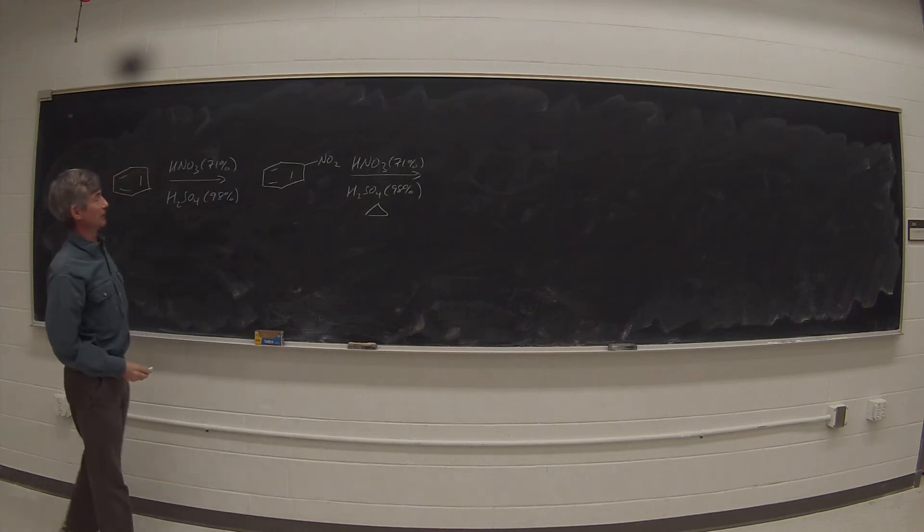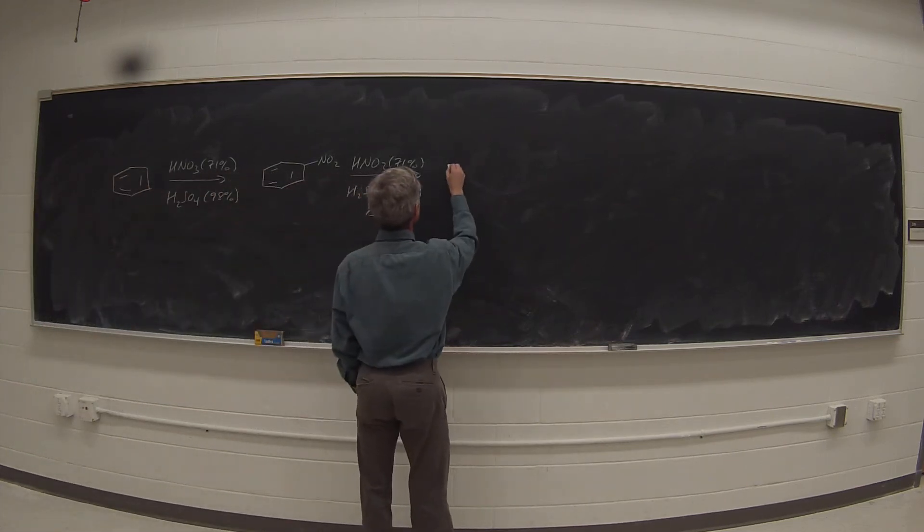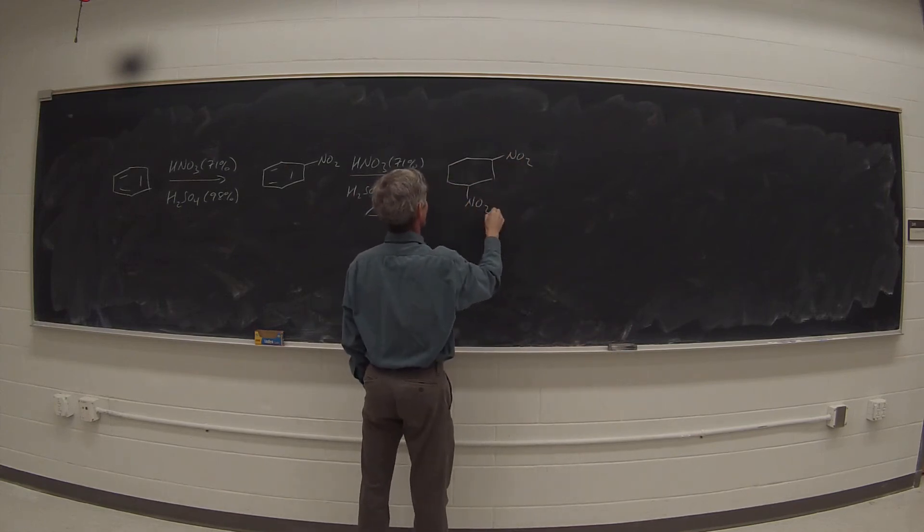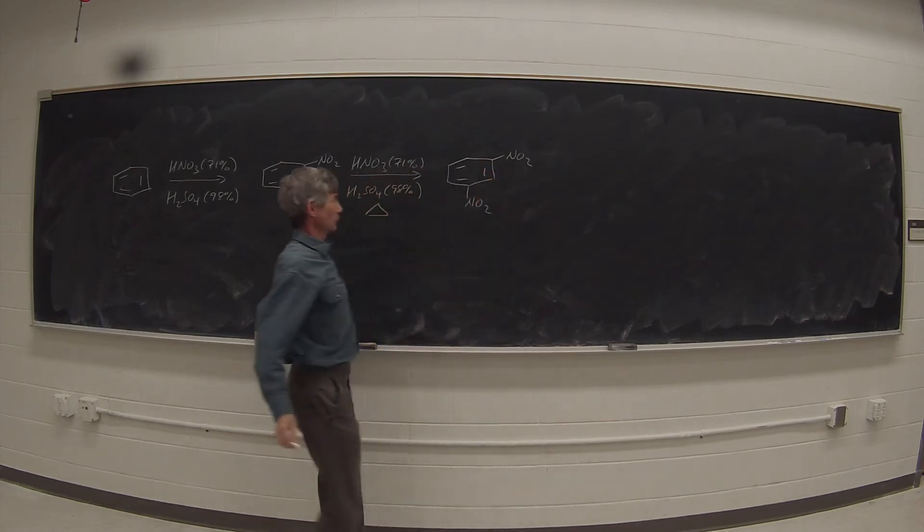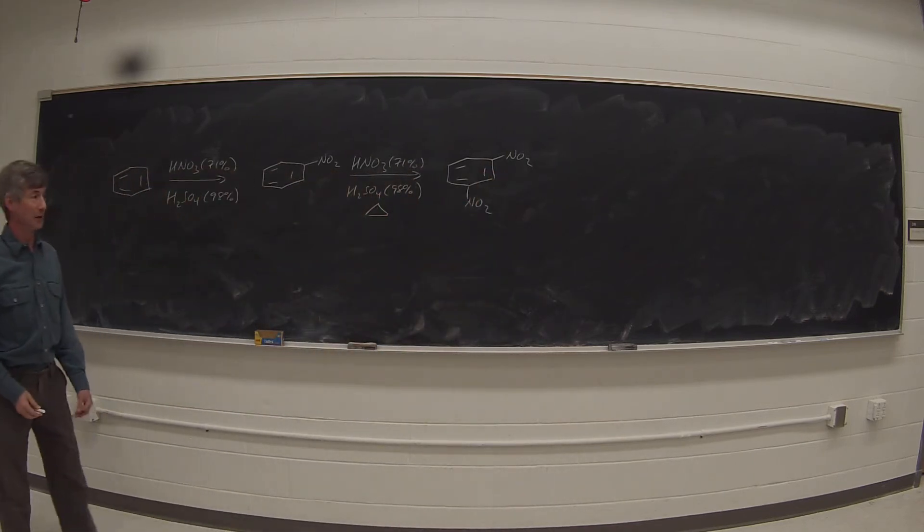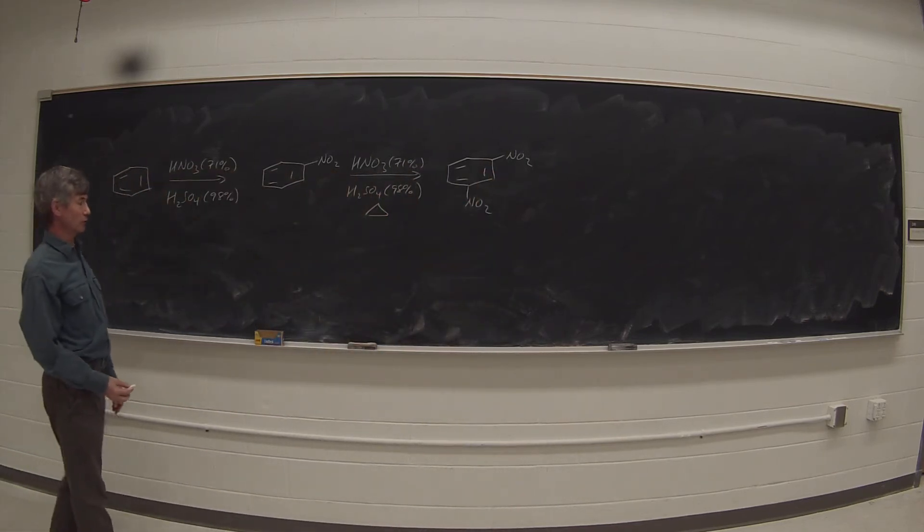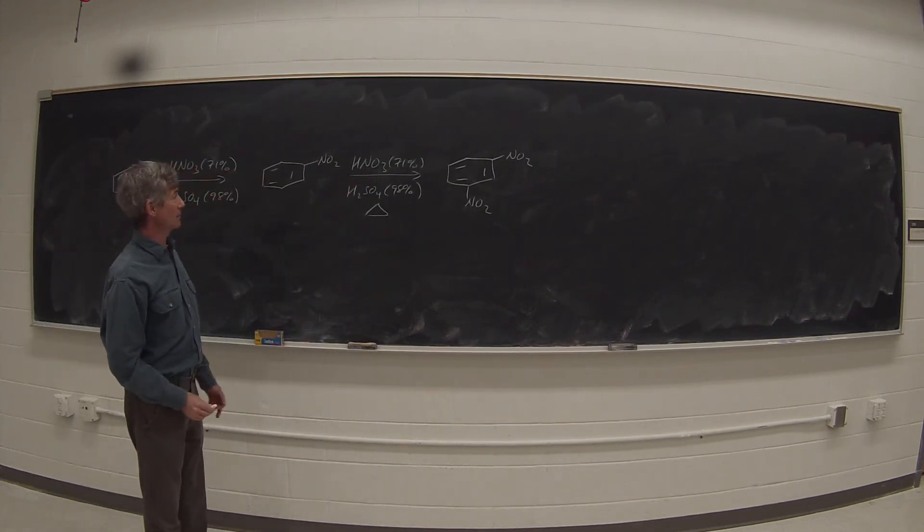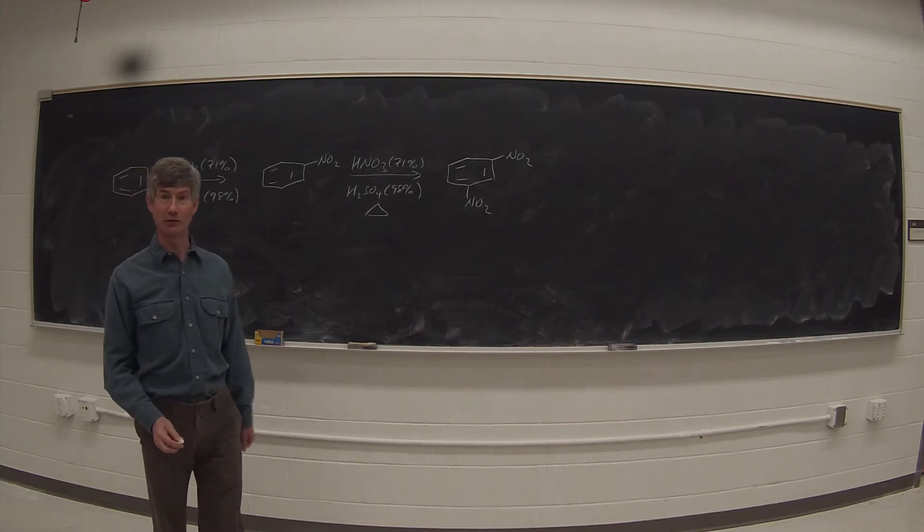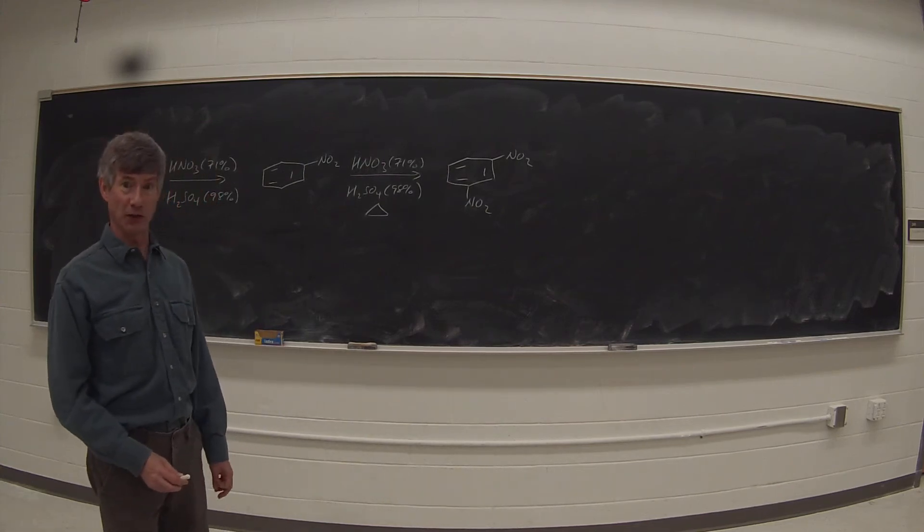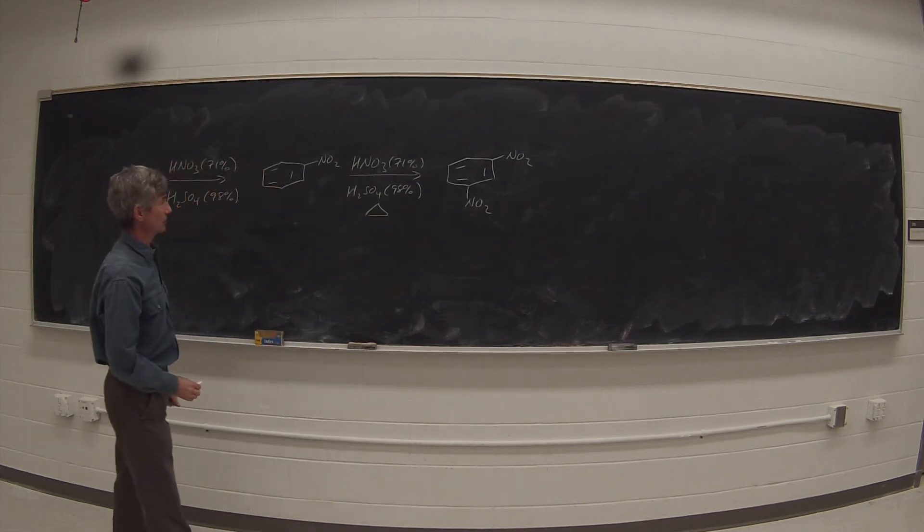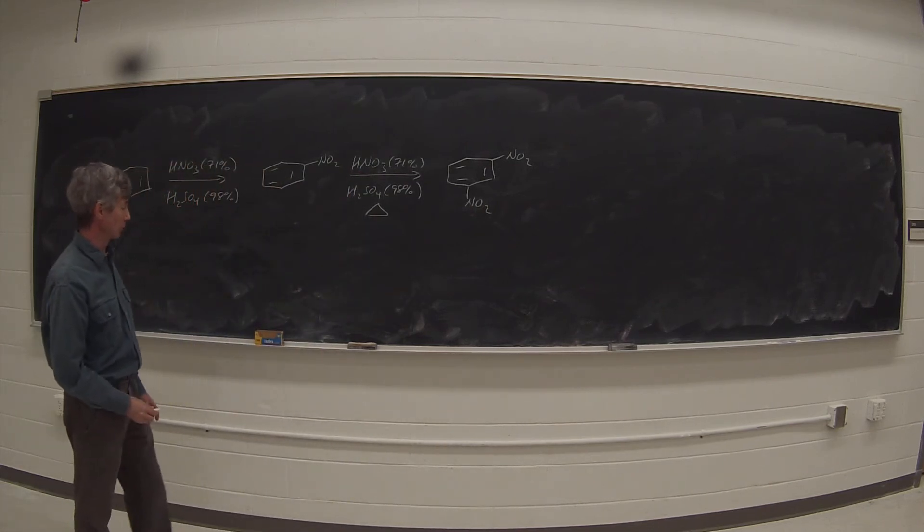But this time, because we have a deactivated substituent on there, we're going to have to heat it up. We can put that second nitro group on. To put the third nitro group on, we would either heat it even more, or more likely switch to 100% nitric acid. 100% nitric acid is actually made by mixing concentrated sulfuric and concentrated nitric acid, and then distilling out the pure nitric acid from that mixture of concentrated acids. It's not a very pleasant procedure to run, but it works well.